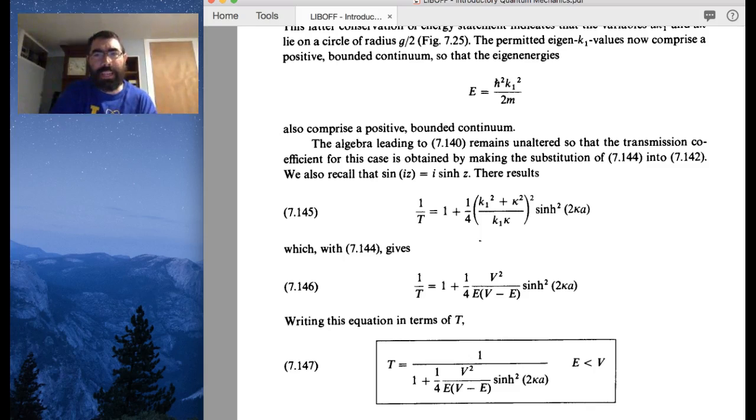Now, the interesting thing is there's a k2 inside the sine, and so you have to think back to the trig identity, which says the sine of the imaginary number I times a variable Z is I times the sinc, not the sinc function, the hyperbolic sine function with an I out front.